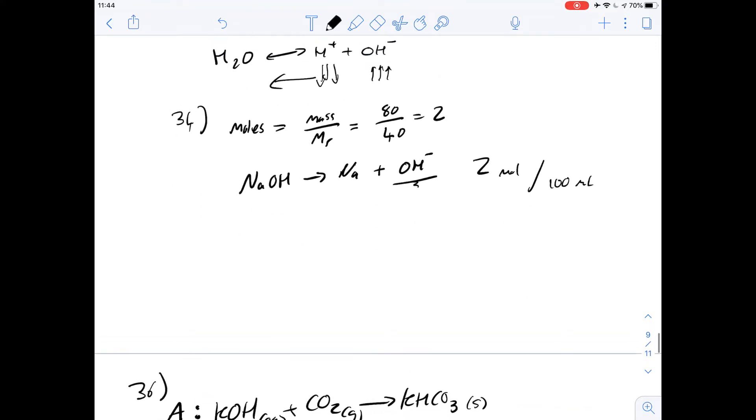If we know that, and we're given in the question that Kw, the water dissociation constant, shows us that the hydrogen ion concentration multiplied by the concentration of hydroxide ions is 1 times 10 to the minus 14, and we know the concentration of hydroxide ions, we can work out the concentration of the protons and the pH from there.